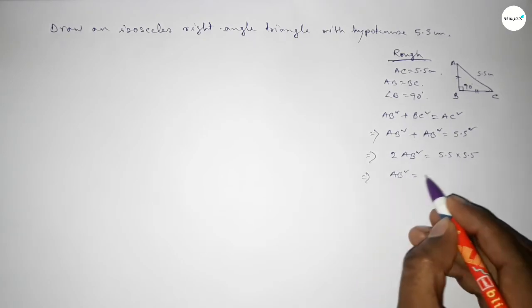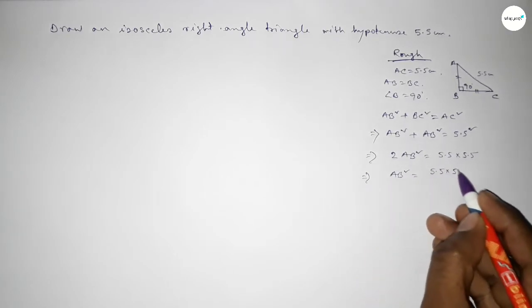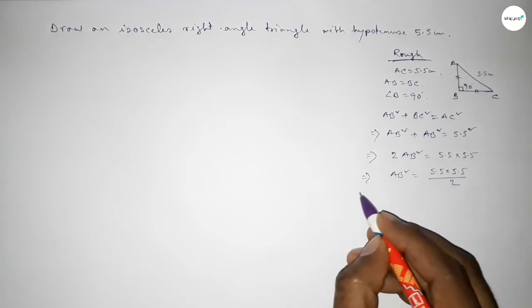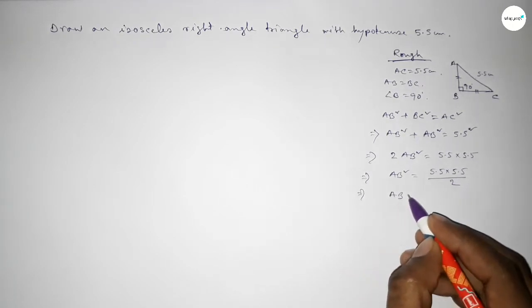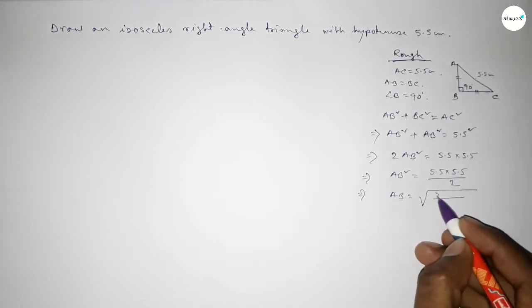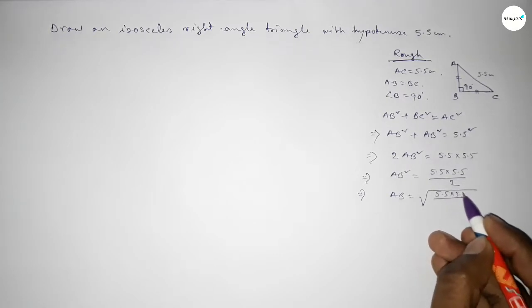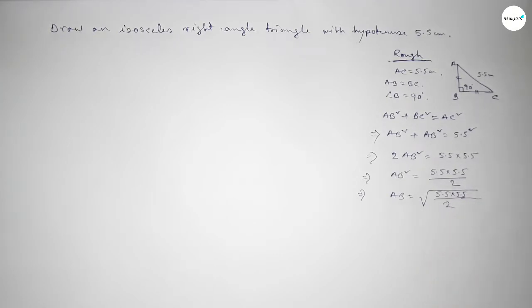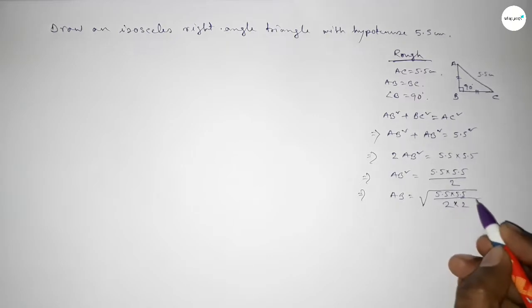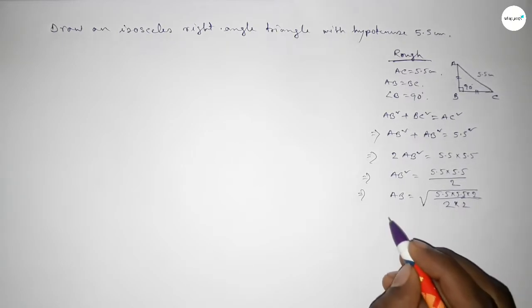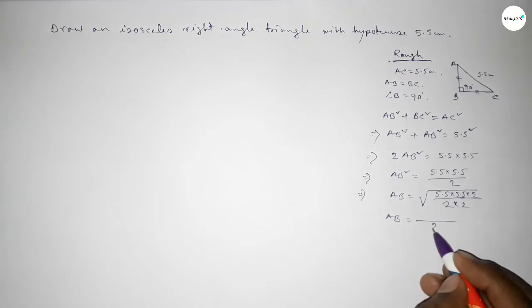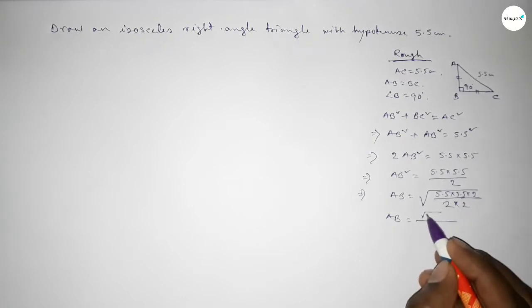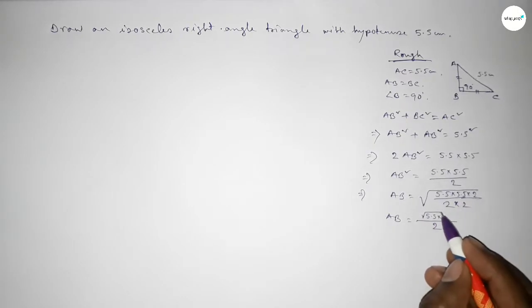This implies AB² equal to 5.5 into 5.5 over 2. Therefore AB equal to root of 5.5 into 5.5 over 2. Now multiplying up and down by 2, we get AB equal to 5.5 into root 2 over 2.